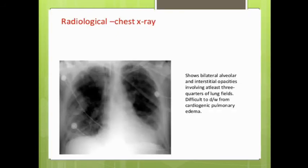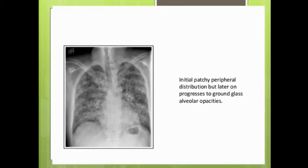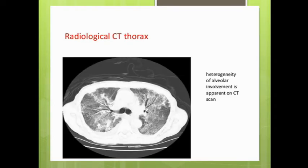On radiological examination, bilateral infiltrates with diffuse opacity are seen, particularly in the dependent areas of the lungs. Unlike cardiogenic pulmonary edema, which shows a bat-wing opacity pattern radiating from the hilum, ARDS shows patchy distribution initially, progressing to ground-glass opacity or diffuse opacity on both lungs. On CT scan, a heterogeneous patchy pattern with anterior involvement is apparent.